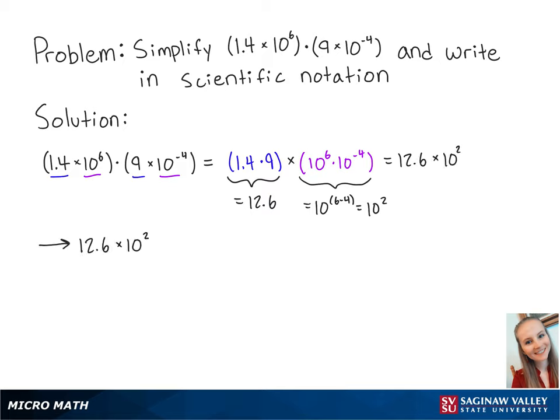We want to write this in scientific notation, which means that we need to move the decimal to the left one time. So this is equal to 1.26 times 10 to the 1 times 10 squared. And using our exponent rules again, this is equal to 1.26 times 10 to the 3rd. And this is the final answer.